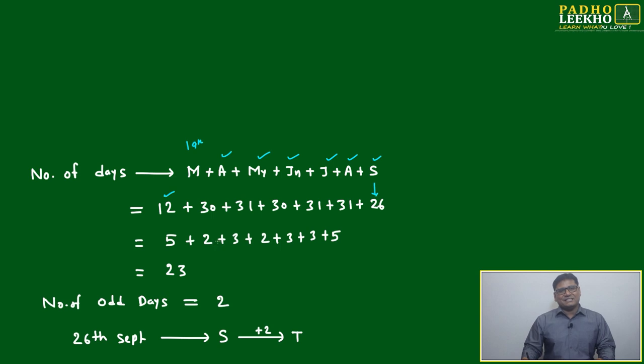After that, we'll calculate number of odd days. It will be 5 + 2 + 3 + 2 + 3 + 3 + 5. Total 23 is coming.